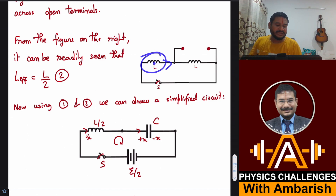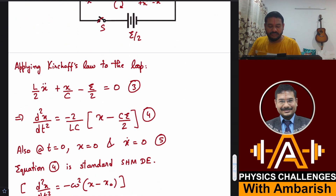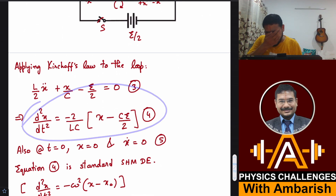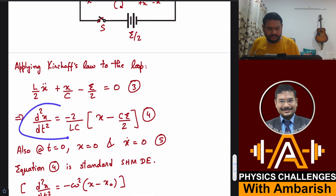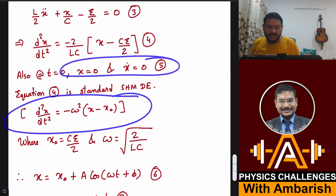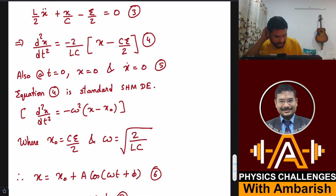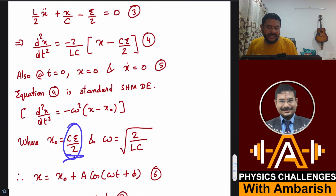Initial current in the inductor is 0, so through the capacitor the initial current is also 0. Thus both x and ẋ are 0 at t = 0. Rearranging and comparing with the standard SHM equation d²x/dt² = −ω²(x − x₀): by comparison x₀ = CE/2 and ω = √(2/LC).